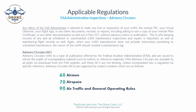Advisory circulars (ACs) are a type of FAA publication issued to inform the public of non-regulatory material such as notices or reference materials. They are available to all pilots as free downloads from the FAA website and are not binding unless incorporated into a regulation by specific reference. ACs are organized by subject numbers: AC 60 refers to airmen, AC 70 refers to airspace, and AC 90 refers to air traffic and general operating rules. Memorize those — 60 for airmen, 70 for airspace, 90 for air traffic — there will likely be questions on the FAA exam.